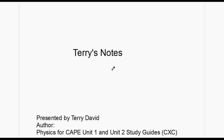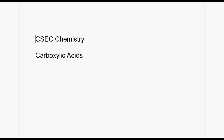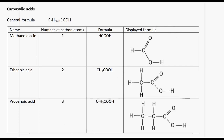Welcome to another episode of Terry's Notes. Today we are going to be looking at carboxylic acids, sometimes referred to as alkanoic acids. The general formula for a carboxylic acid is CnH2n+1COOH. The functional group present here is the COOH group.